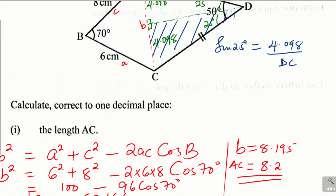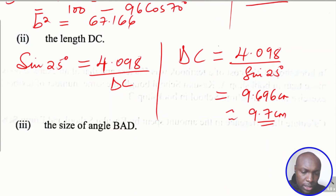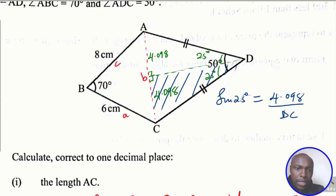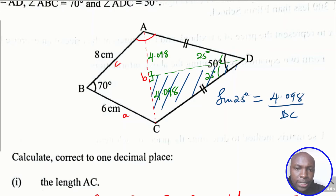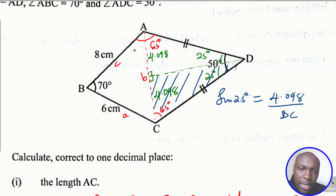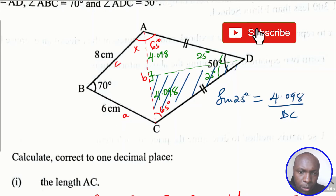For the third part, we need to find angle BAD. This full angle is made up of two angles from the two triangles. Since triangle ADC is isosceles and angle ADC is 50 degrees, the base angles are each 65 degrees. The main angle we still need to calculate is angle BAC.